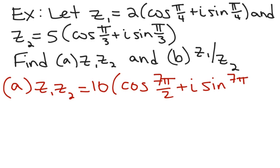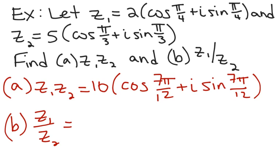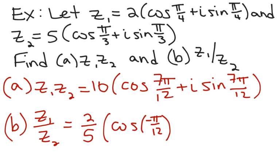You only have to do the angle calculation once because the answer you get for the first angle is going to be the same for the second angle. Now let's divide. When we divide, we divide the moduli and leave this as 2/5. Now we subtract the angles: π/4 minus π/3, which gives negative π/12. We'll come back to that in a second because we're not going to leave it.